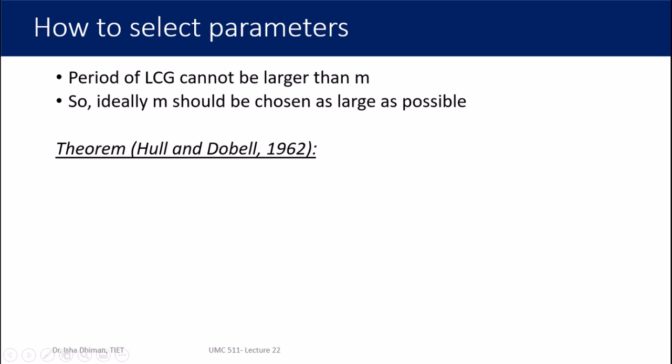Regarding parameter selection: the period of an LCG cannot be larger than m. Since we divide by m and take the remainder, all generated values are less than m. We saw this in the earlier example where m = 5 and the period was 4. Therefore, m should be chosen as large as possible, because a larger m allows for a longer period.